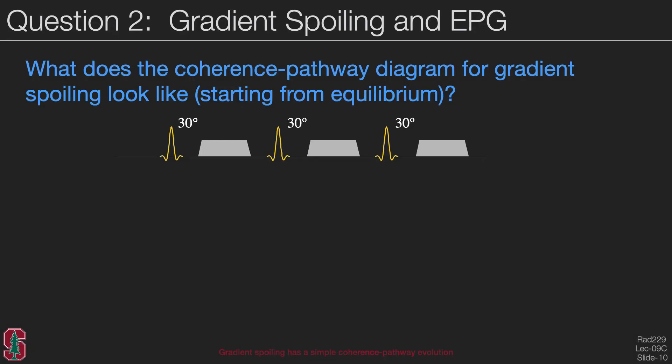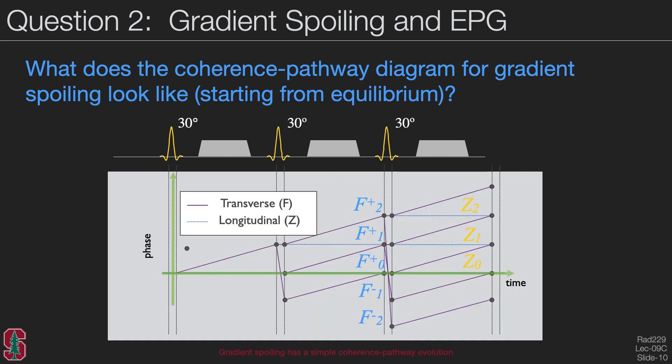What does the gradient spoiling sequence look like with EPG? Specifically, what does the coherence pathway diagram look like for gradient spoiling starting from equilibrium? We sample the signal prior to the spoiler gradient. The coherence pathway diagram includes F and Z states. The F state order is increased by a gradient, and the RF pulse will do a variety of things including pass-through, refocusing, and tipping magnetization into the longitudinal direction.